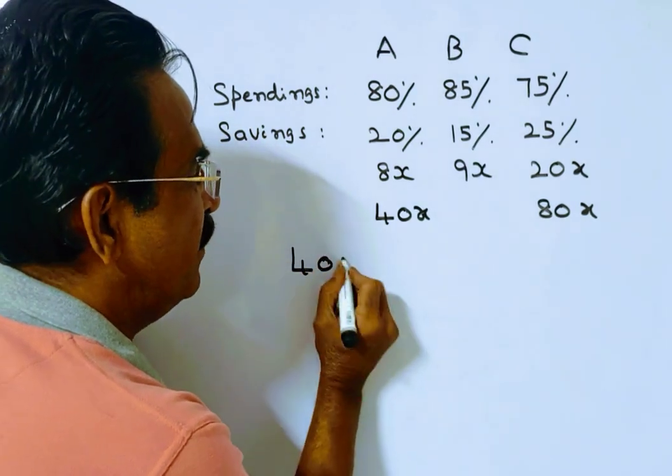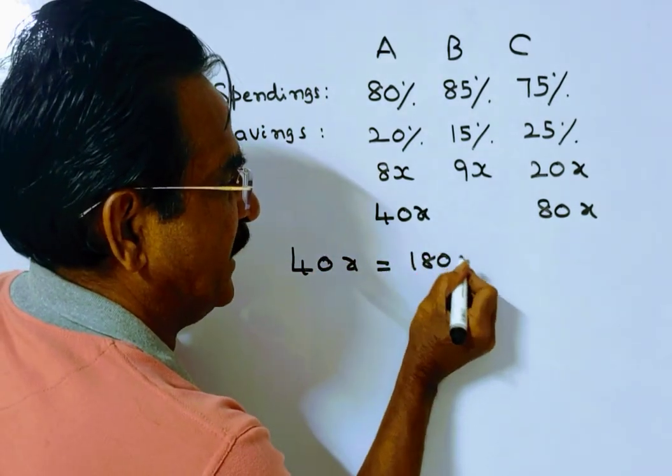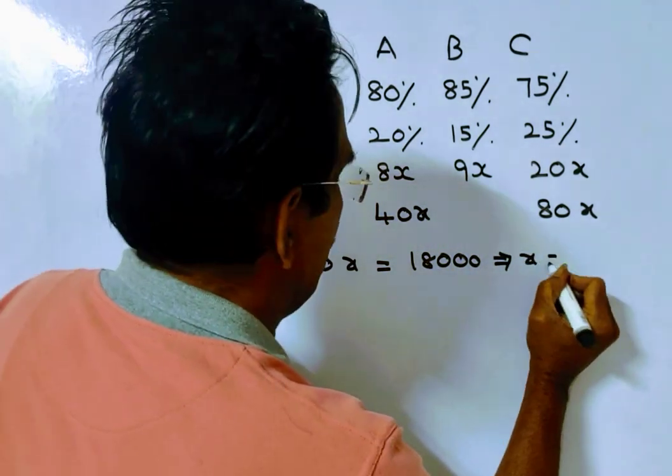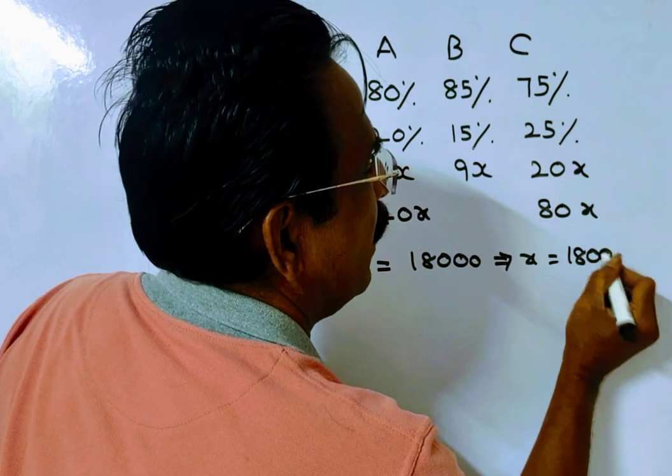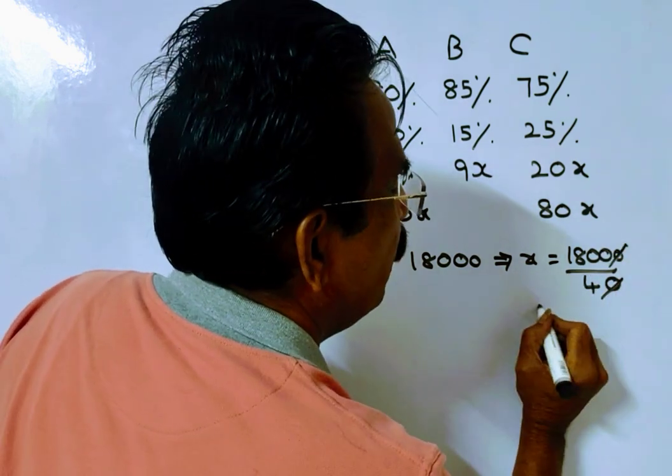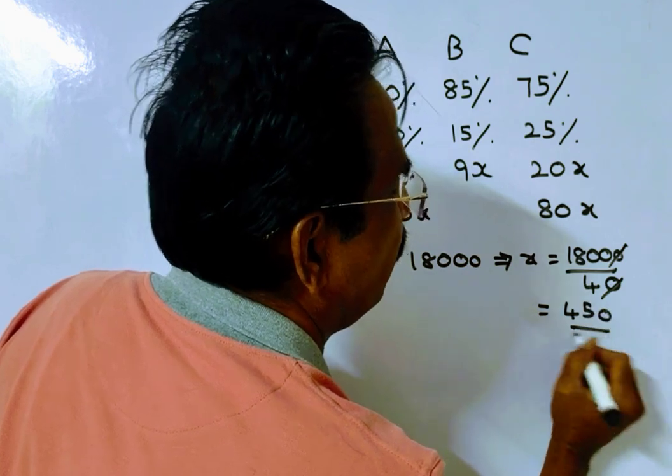So 40x is equal to 18,000, which implies x is equal to 18,000 upon 40, so 450. So x is equal to 450 rupees, friends.